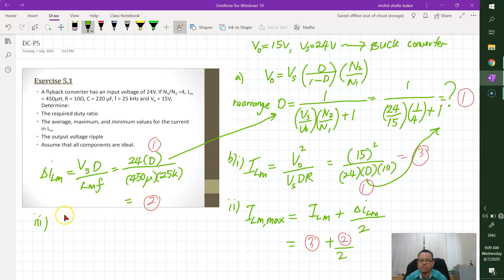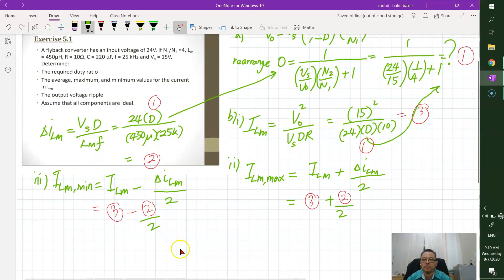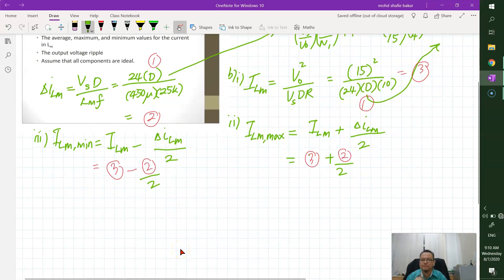And then in order to determine the I L M mean, you have I L M minus change of L M divided by 2. So again we substitute the suitable formula minus 2 this one, divided by 2.